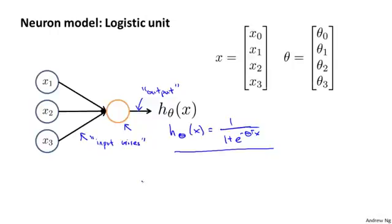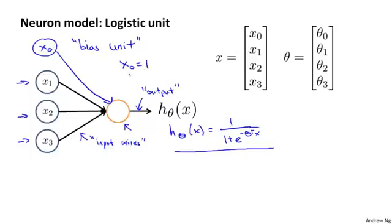When I draw a neural network, usually I draw only the input nodes x1, x2, x3. Sometimes when it's useful to do so, I'll draw an extra node for x0. This x0 node is sometimes called the bias unit or the bias neuron. But because x0 is always equal to 1, sometimes I draw it and sometimes I won't, just depending on whatever is more notationally convenient for that example.